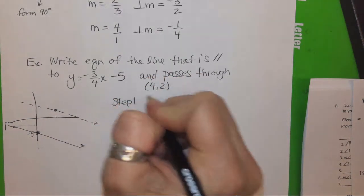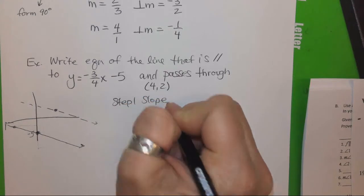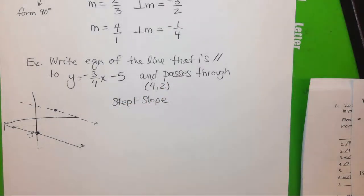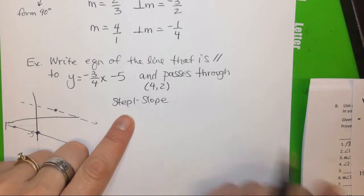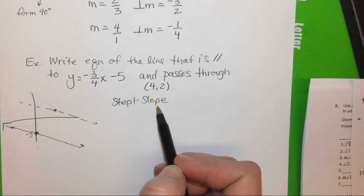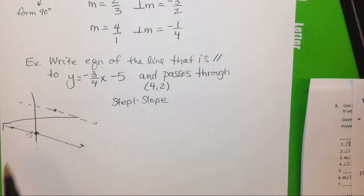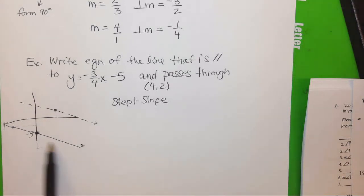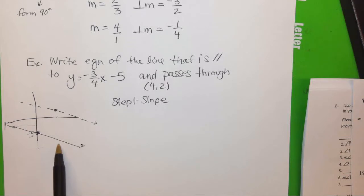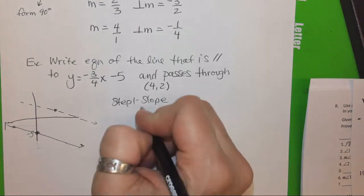So step one is always slope. Now, I'm going to use the find the slope, find the b, and then write your equation. You can do point slope. I am not going to require it. And for the video, I'm going to do it using my three steps. So step one is slope. Where are we getting the slope? We're going to be using this line. We need to figure out what its slope is.